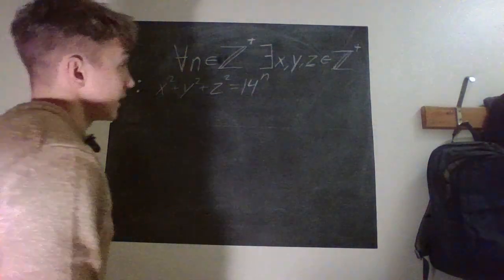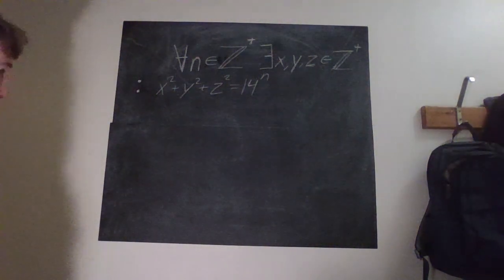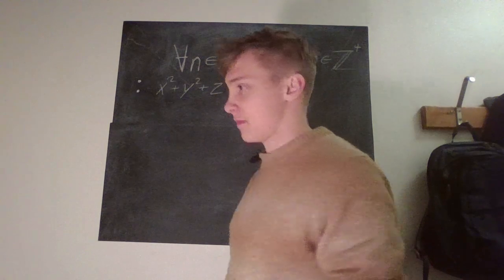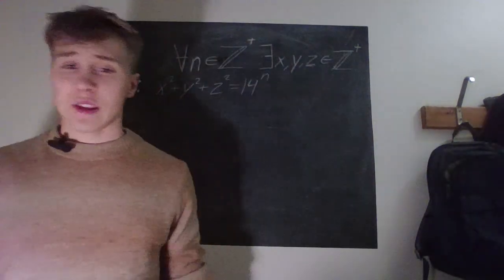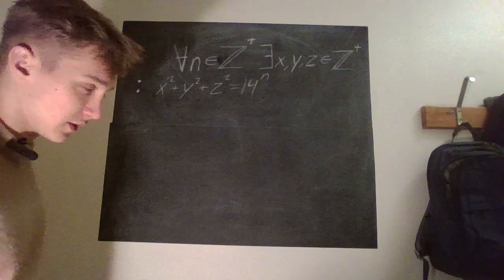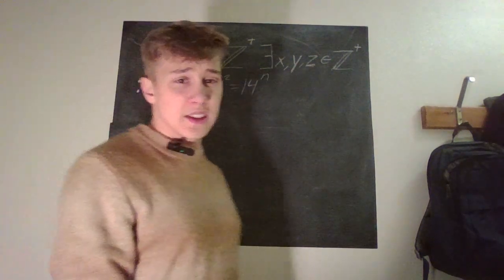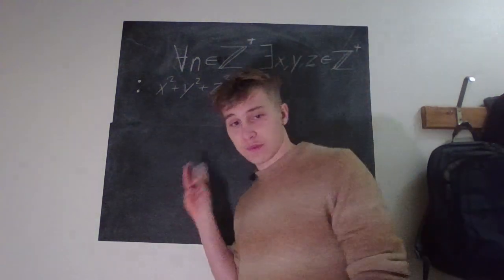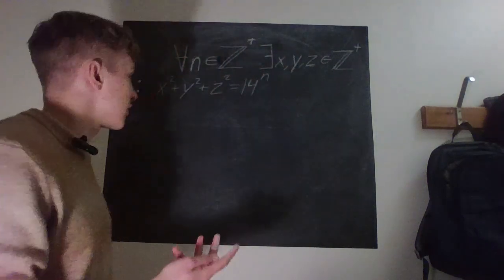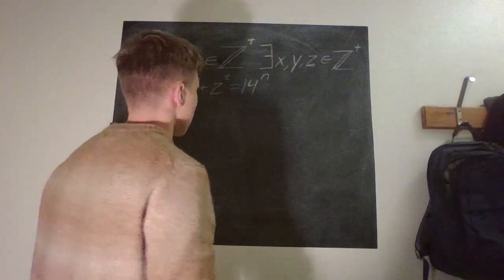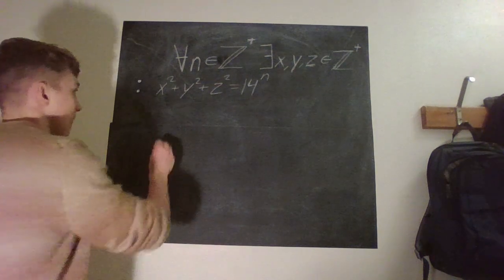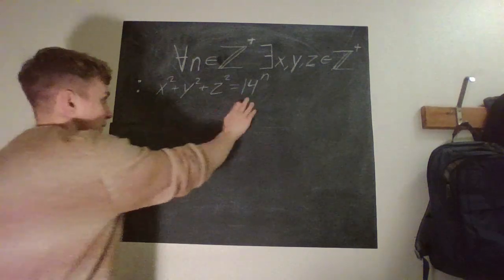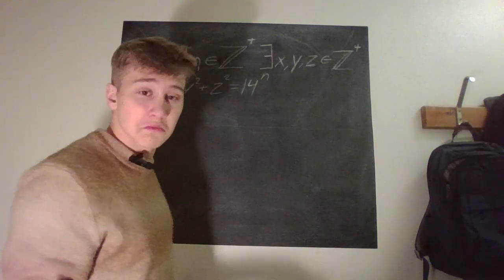Fortunately, it isn't as hard as it seems. Let's start with the most simple case, when n is equal to 2. We have something squared plus something squared plus something squared equal to something squared. The first three terms can just be the same as the fourth, meaning x would be 14 and the others would be zero. Then 14 squared equals 14 squared, so that works.